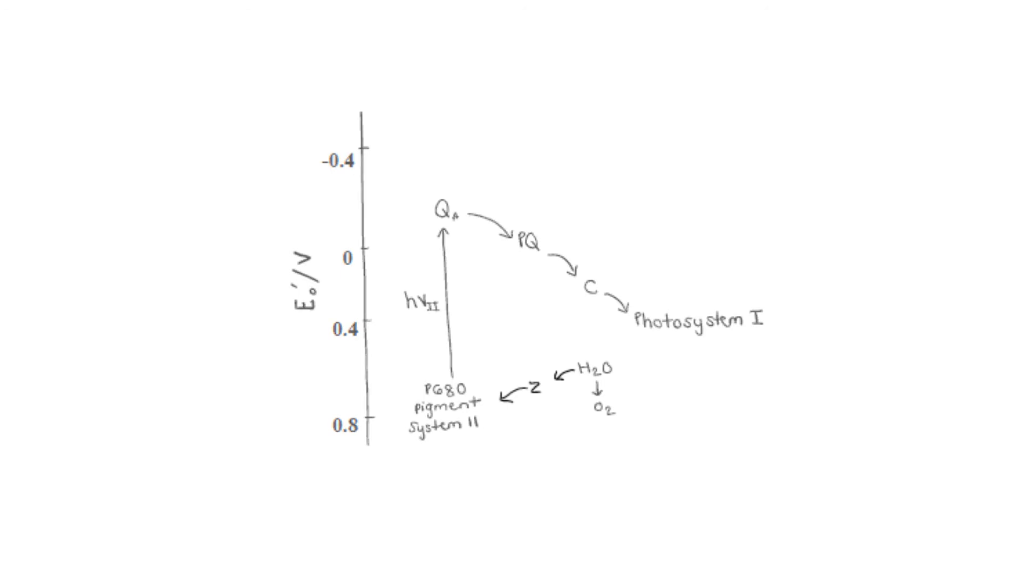In the diagram shown, Z represents the OEC along with a tyrosine residue. The electrons spontaneously flow to P680 because of the Z having a lower reduction potential than the P680. The four electrons in the P680 get excited from a photon of light and then are promoted to a higher energy level.